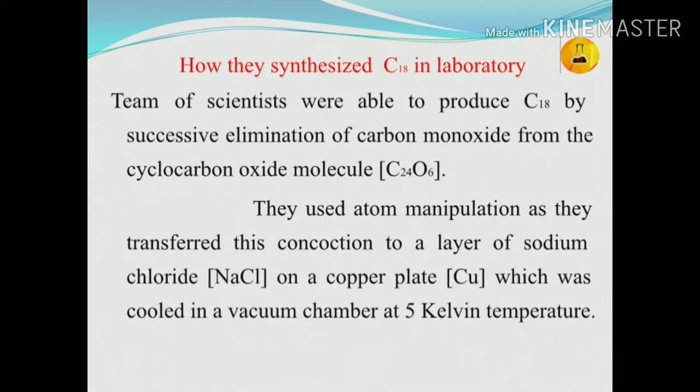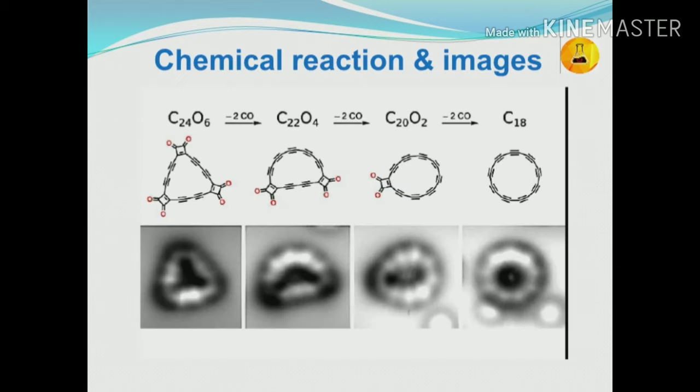How did they synthesize C18 in the laboratory? The team of scientists were able to produce C18 by successive elimination of carbon monoxide from the cyclocarbon oxide molecule C24O6. They used atom manipulation, transferring this compound to a layer of sodium chloride on a copper plate, cooled in a vacuum chamber at five Kelvin temperature.